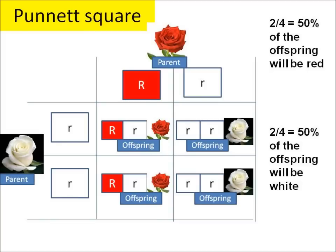Using a Punnett square we can predict the probability of whether the offspring rose will be either red or white. In this example, one parent is big R little r and is red, and one parent is little r little r and is white.